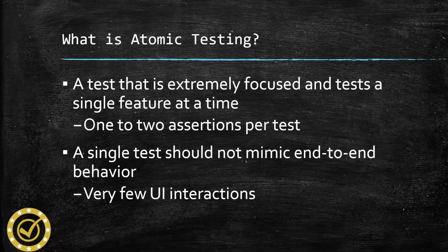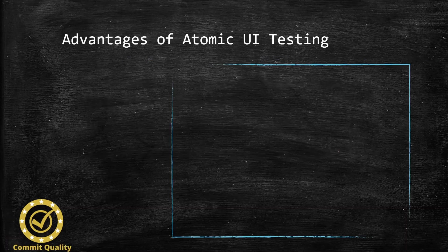Another thing is an atomic test should not mimic end-to-end behavior. This means we want very few UI interactions, as with end-to-end testing you're not testing a single item or single feature. This doesn't mean you can't have end-to-end tests; you just need to understand the difference between both.